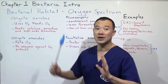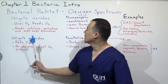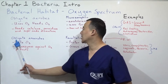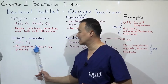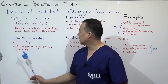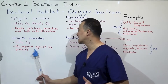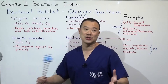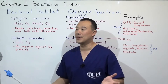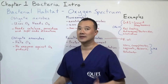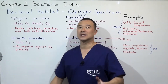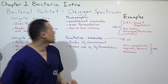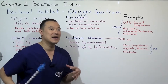Because obligate aerobes live in an oxygen environment, they need catalase, peroxidases, and superoxide dismutase — I'll explain those terms later. Obligate anaerobes, on the other hand, hate oxygen. They don't have or need any enzymes against oxygen products, because oxygen would be toxic to them.